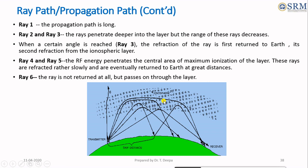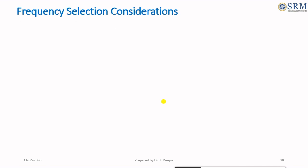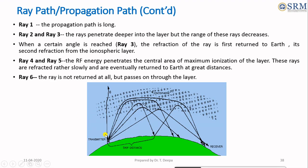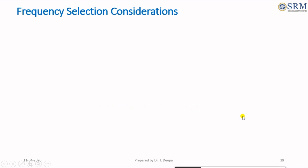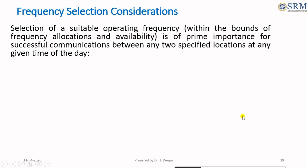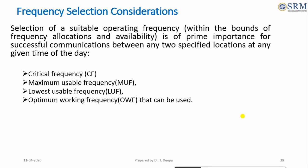In the case of ray 3, at a certain angle, the refraction of the wave is returned to the earth at a minimal distance from the transmitter, but ray 3 still manages to reach the receiving site on its second refraction from the ionospheric layer. For ray 4 and ray 5, at the increased angle, they are highly dense at the center of the maximum ionization layer, where the refraction occurs more slowly and they are returned to the earth at greater distance. If the angle is too large, the wave is bent away from the earth and communication will be lost. Therefore, the selection of a suitable operating frequency is very important for successful communication between the transmitter and receiver at any given time of the day.